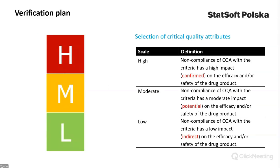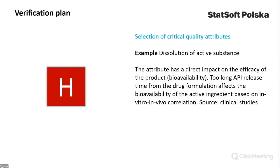For instance, high criticality means that non-compliance of a CQA with the acceptance criteria has a high impact on the efficacy and/or safety of the product. Low criticality means that low quality has a low, indirect impact on the efficacy and/or safety of the product. For example, dissolution has a direct impact on the efficacy of the product and bioavailability. Too long API release time from the drug formulation affects the bioavailability of the active ingredient, based on in-vitro/in-vivo correlation.